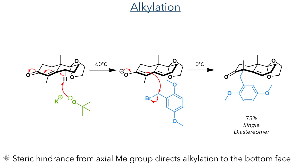With this protected, they then carried out an alkylation. Potassium tert-butoxide first deprotonates the molecule, forming a conjugated dienone that was then alkylated at the alpha position by a reaction with a bromide. This formed the product as a single diastereomer, and this selectivity can be attributed to steric hindrance from the axial methyl group directing the incoming electrophile to the bottom face of the molecule. The initial deprotonation was carried out at 60°C to ensure the formation of the thermodynamic enolate, as lower temperatures could favour deprotonation of the alpha position. Once this was formed, it was cooled to 0°C before the addition of the electrophile, as the lower temperatures would aid in the control of the stereoselectivity.